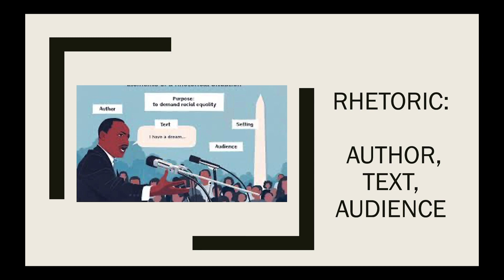Rhetoric at its most basic form consists of an author, a text, and an audience — and we use these words very loosely, so this can come in many forms. You can have the conventional form of public speaking. Rhetoric was first codified in ancient Greece when public speaking in public forums was the primary dominant mode of public communication, and obviously this has not changed.